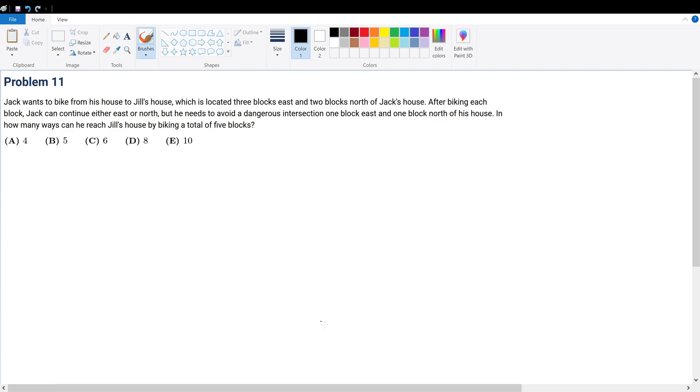Problem 11. Jack wants to bike from his house to Jill's house, which is located 3 blocks east and 2 blocks north of Jack's house.